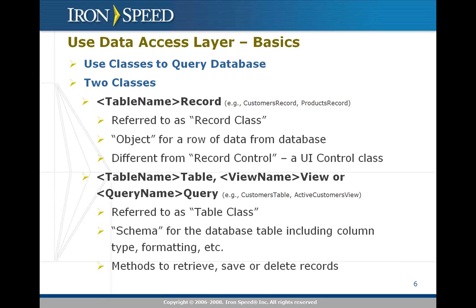The employees record class is referred to as the record class. When you look at the documentation, we always talk about the record class being used. A record class is essentially a class that represents a row of data from the database. You could take an instance of that record class and access all of the data for that row — for example, record.firstname, record.lastname, and so on. Keep in mind that this record class is different from a record control class, which is a UI class that handles the display part.